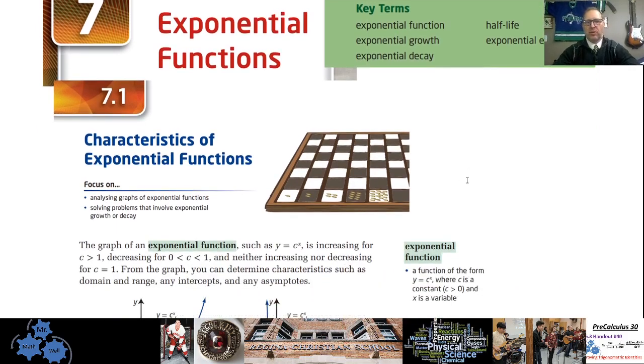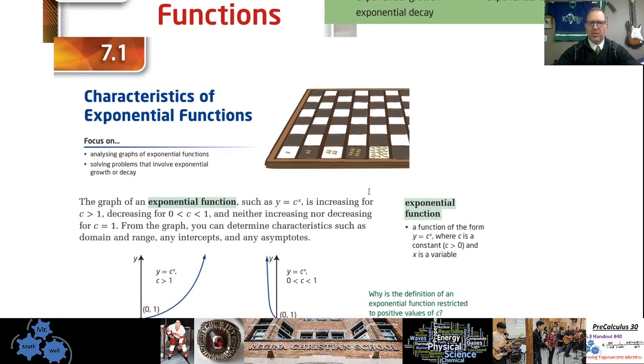7.1 talks about characteristics of exponential functions. So when we have an exponential function, the key is that we have the x, or the independent variable, is in the exponent position. It's an exponential function, exponent function. And so x is in the exponent position.